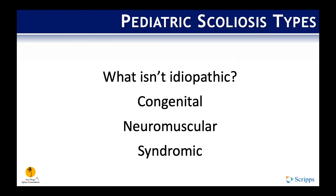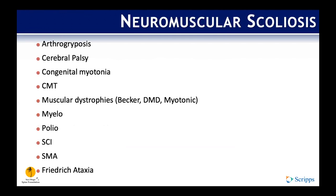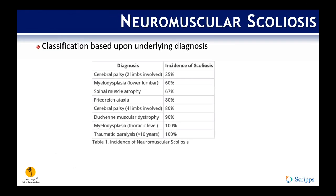What isn't idiopathic? Starting with neuromuscular — there's a long list of neuromuscular syndromes with a high rate of association with scoliosis development, including cerebral palsy, CMT, myelodysplasia, and SMA. Looking at incidence from the SRS: myelodysplasia at thoracic level is up to 100%, and cerebral palsy at lower GMFCS is as low as 25%, but overall a pretty high rate of scoliosis development with these neuromuscular diagnoses.